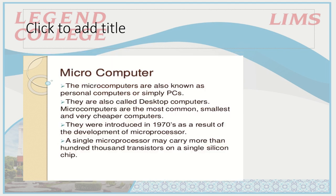First, microcomputers — these are also known as personal computers or simply PCs. They are also called desktop computers. Microcomputers are the most common, smallest, and cheapest computers, commonly used in households and for normal use. In 1970, they were developed on a single microprocessor, and this microprocessor had more than 100,000 transistors.